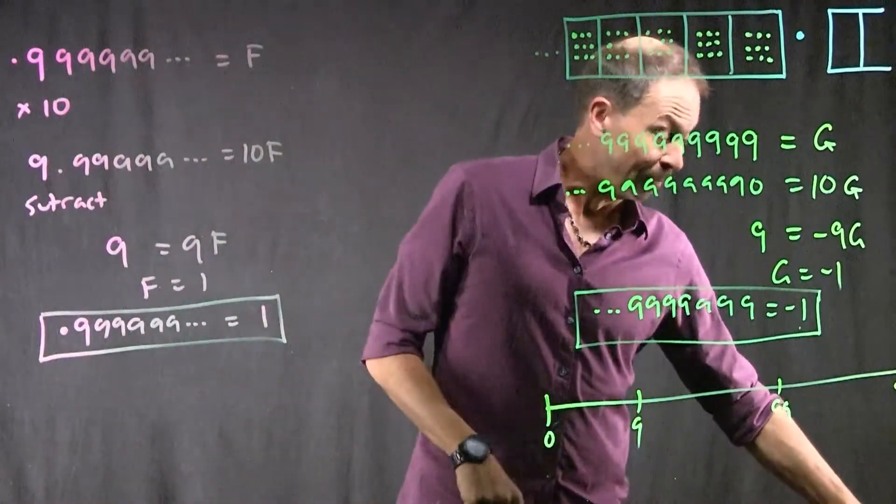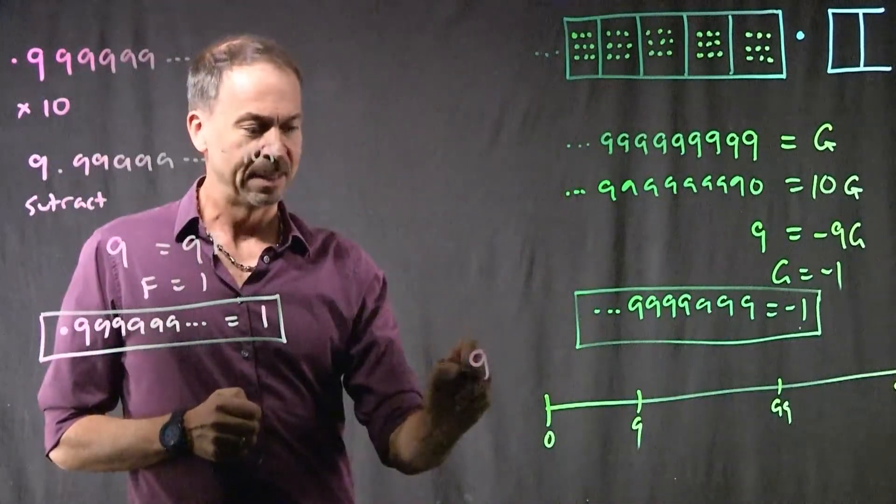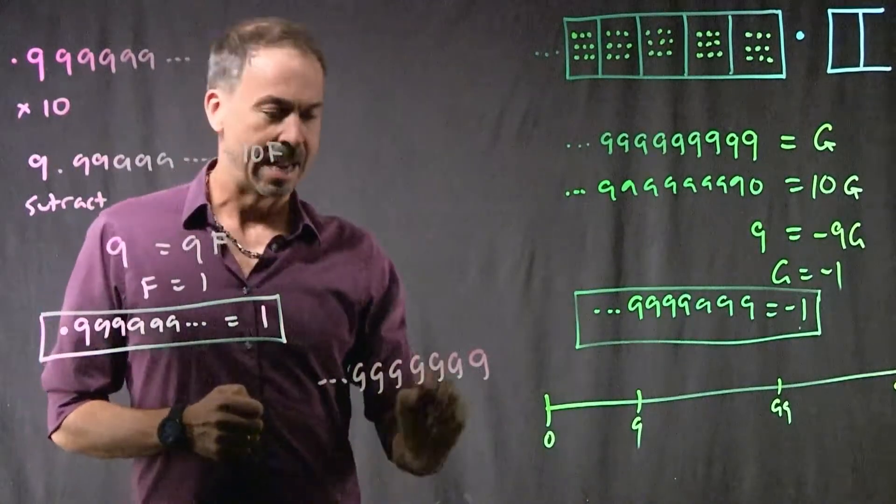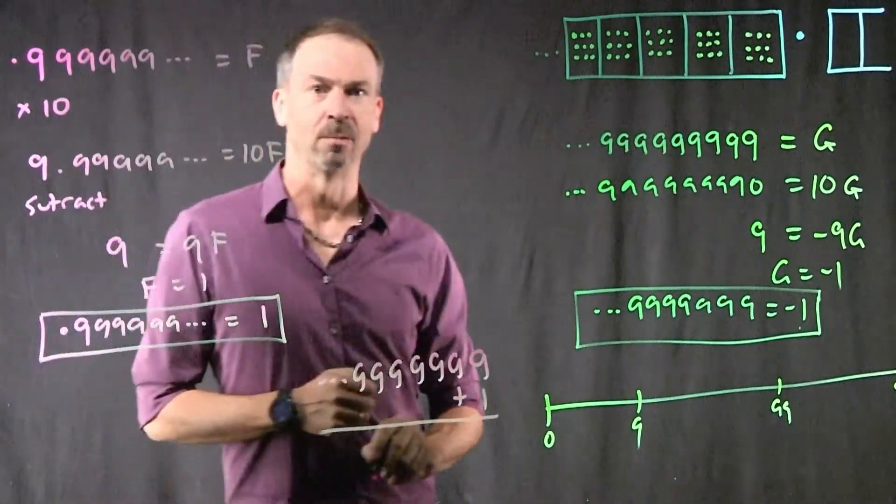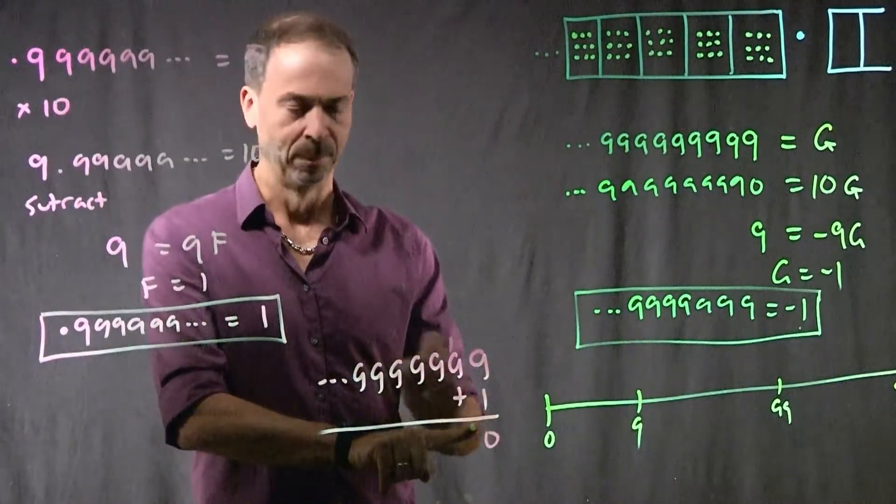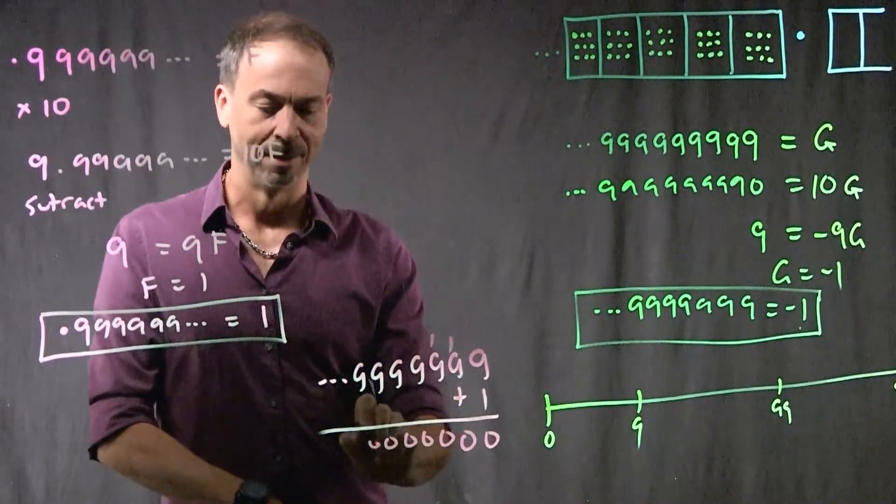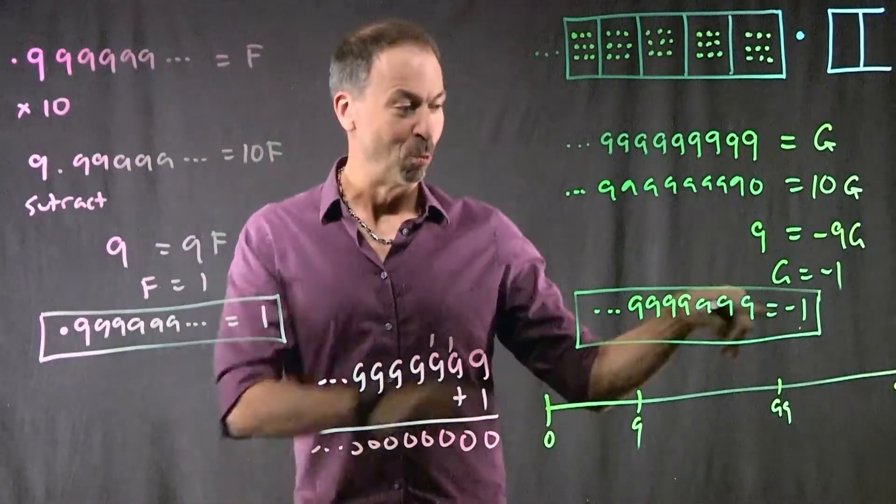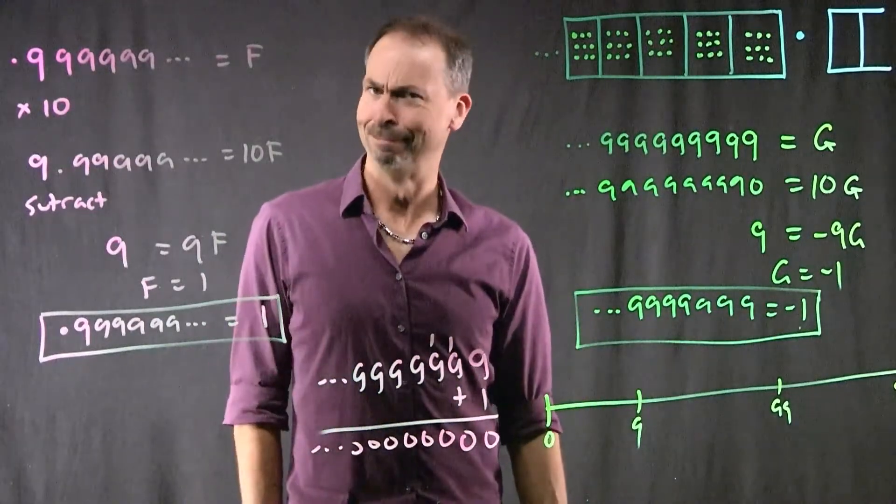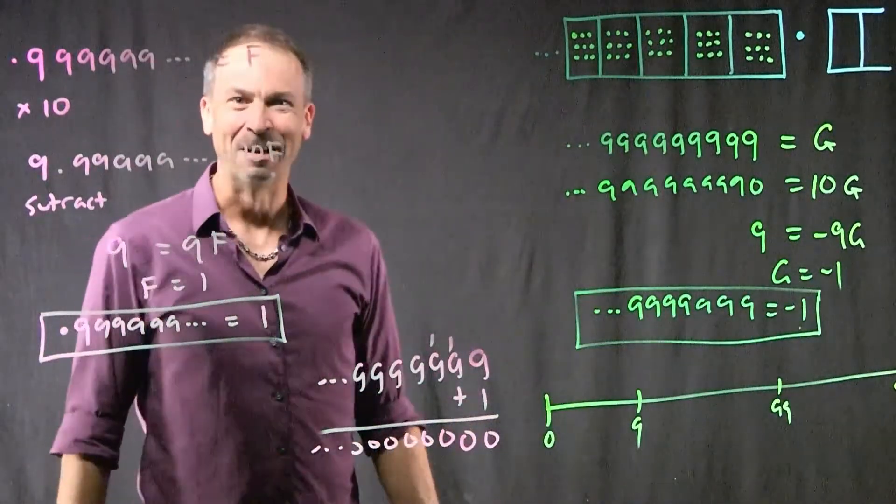You know, actually maybe this is true. If I did ordinary arithmetic, if I took this number, infinitely many 9s to the left, and added 1 to it, in a long addition algorithm, what do I get? 9 plus 1 is 0. Carry the 1. Kaboom. 9 plus 1 is 0. Carry the 1. Kaboom. Carry the 1. Carry the 1. It does seem to equal 0. Adding 1 to this number seems to give you 0. Oh, it must be negative 1. Do you believe any of this? This is crazy.